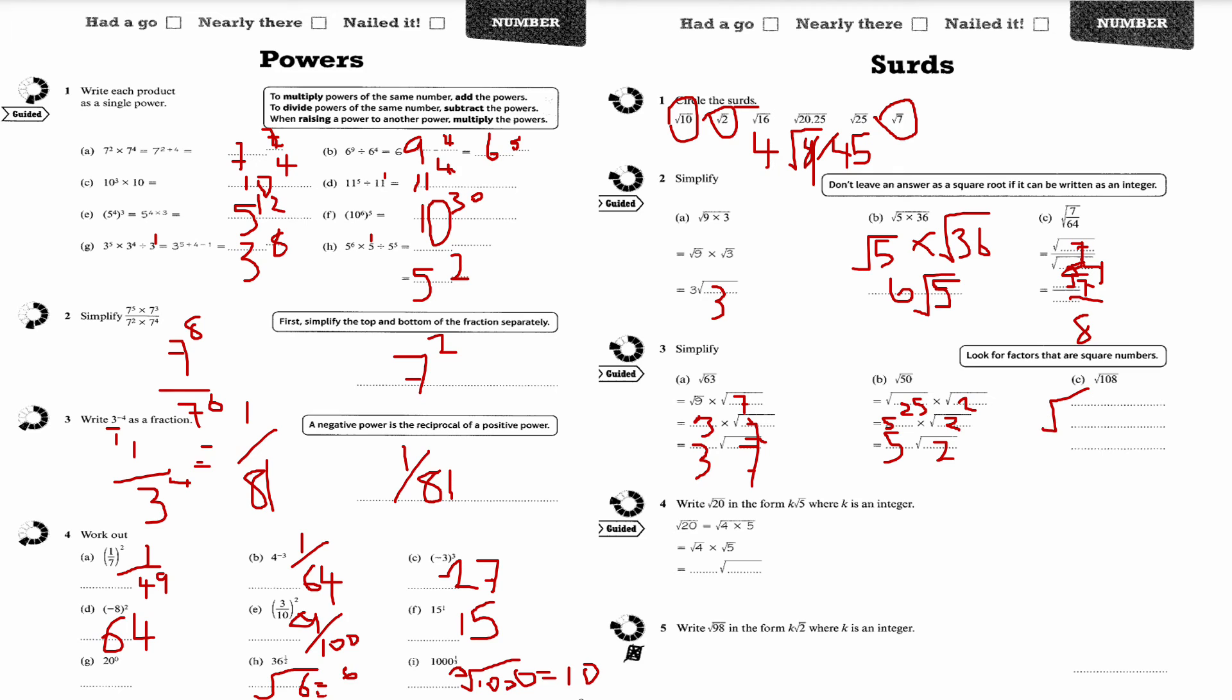This is going to be root 36 times root 3. This is going to equal to 6 root 3.